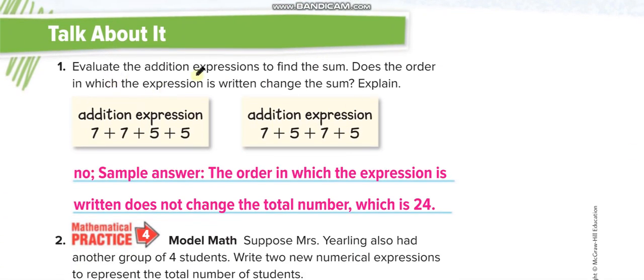Evaluate the addition expression to find the sum. See guys, in both of them if you add them you will get the same answer—the answer is 24. What they did, they just changed the order. So if you change the order, the answer will not change. No, the order in which the expression is written does not change the total number. If you remember, in addition we have commutative property—we can switch the numbers, right?